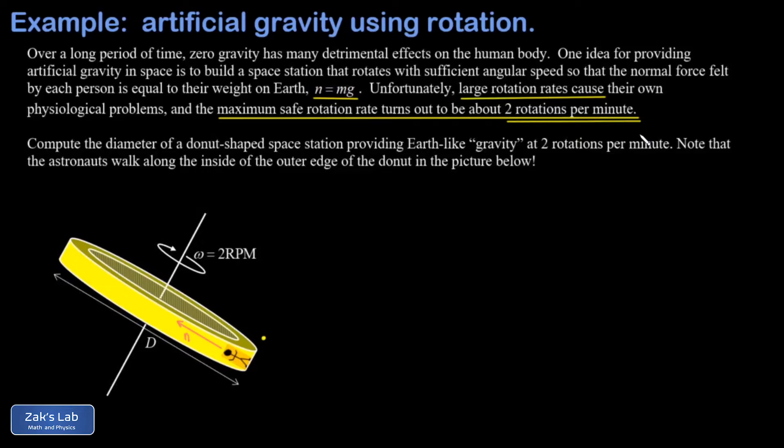The whole physics problem is to figure out what diameter is going to allow you to create an earth-like gravity with two rotations per minute as your rotation rate. We're going to approach this by looking at a Newton's second law analysis of this astronaut.